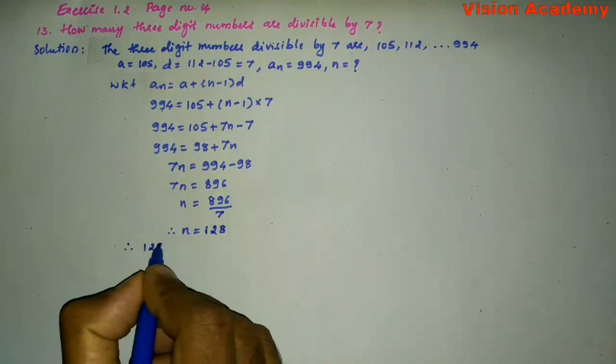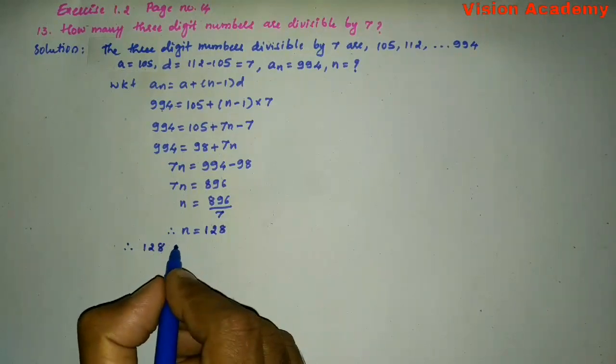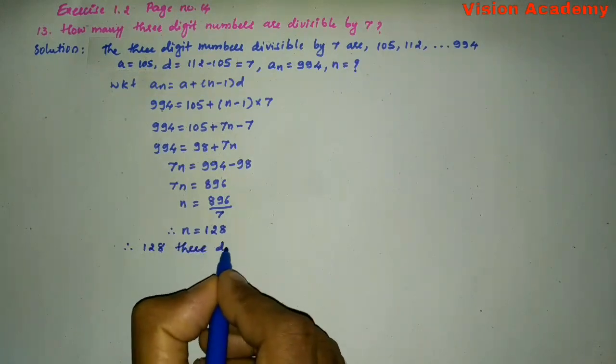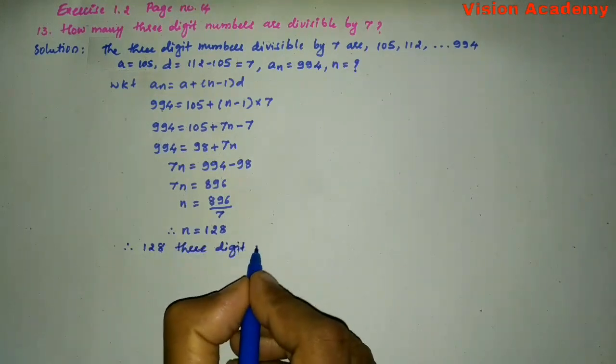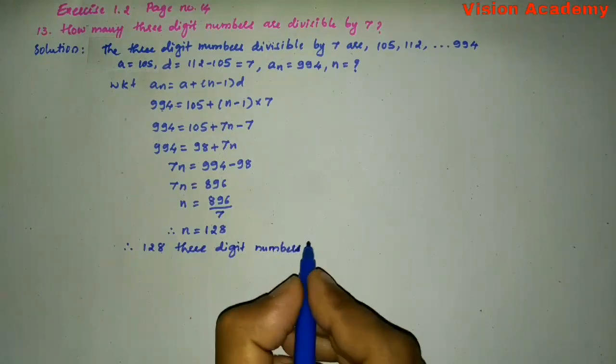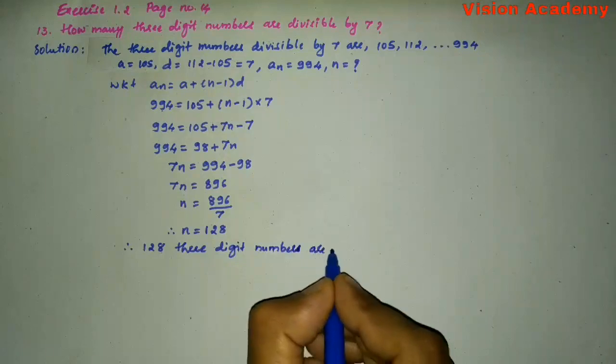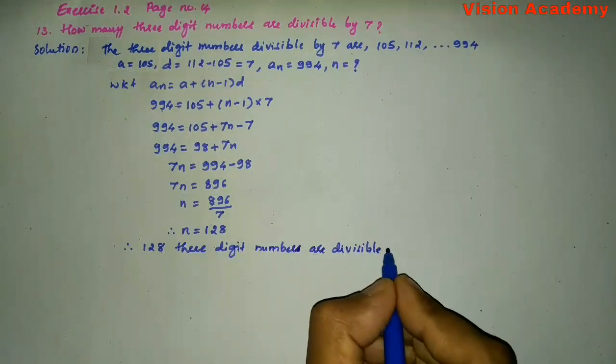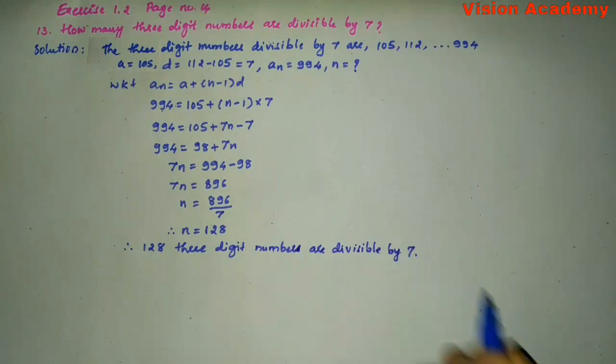Therefore, N = 128. Therefore, 128 three-digit numbers are divisible by 7. Jai Hind, Jai Karnataka.